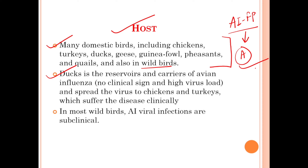In most wild birds, avian influenza — also known as fowl plague — normally resides with no clinical conditions developing. Ducks carry and spread the virus to chickens and turkeys, where the avian influenza condition develops and is more clinically pronounced. If a wild bird is infected, it will be subclinical, meaning you will see no symptoms.